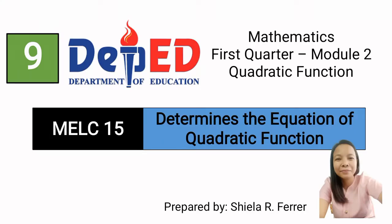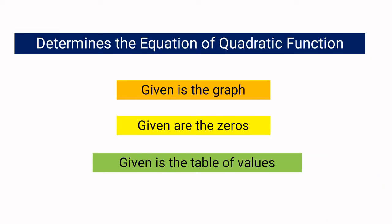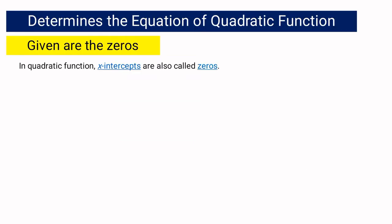For competency number 15, we are going to discuss determining or obtaining the equation of the given quadratic function. The given could be either the graph, zeros, or table of values. In quadratic function, x-intercepts are also called zeros.